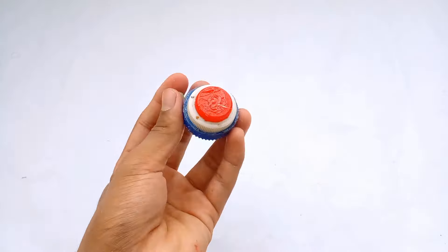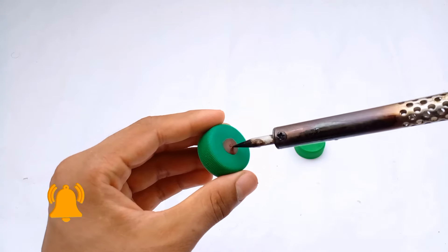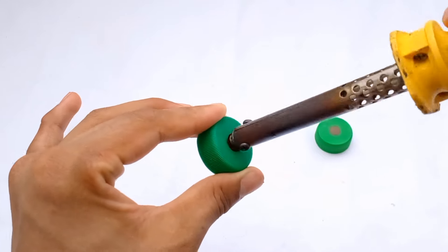Wow, the Beyblade is now complete! Now moving on to the launcher, take two bottle caps and make holes on both bottle caps just like Sinon demonstrates in the video.